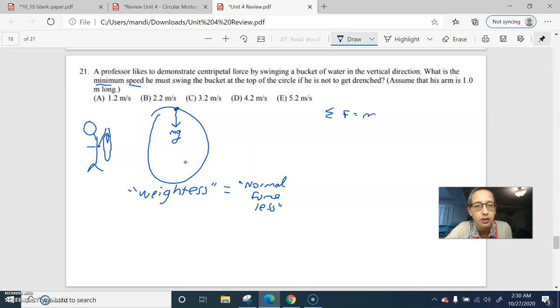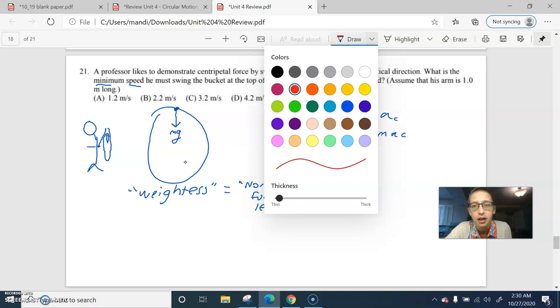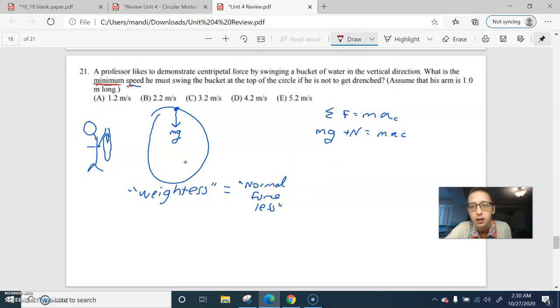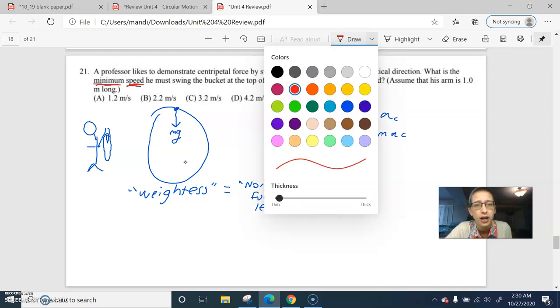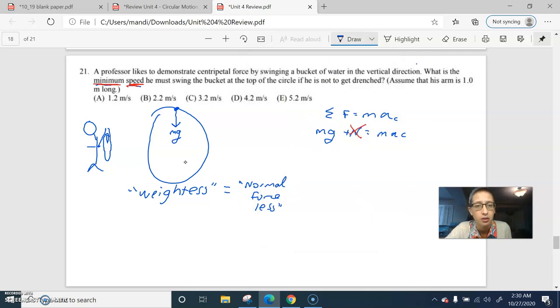So we're going to do the sum of the forces equals m a_c. Normally we would do mg plus normal equals m a_c, but we are doing the minimum speed so that means don't worry about the normal. We're going to do, what if normal force was zero? What is the speed where that is okay? So we're going to mg equals